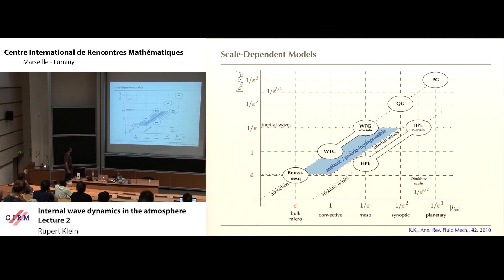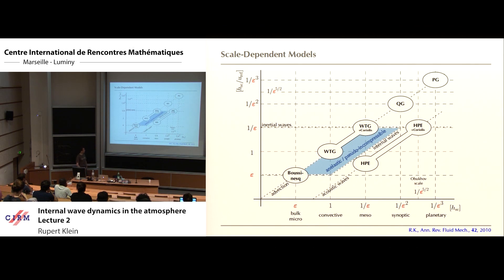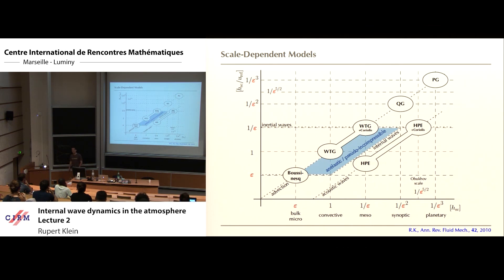And the diagram that comes with it: I explained length scales, time scales, all in powers of epsilon. On the cross points of these, you find various reduced models that you also find in the textbooks — hydrostatic primitive equations, weak temperature gradient near the equator, quasi-geostrophic, planetary-geostrophic, Boussinesq, and there are more. And today, I want to talk about this blue region here, where the so-called anelastic and pseudo-incompressible models reside.